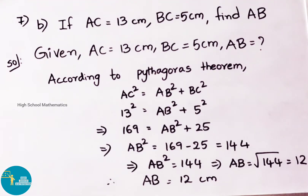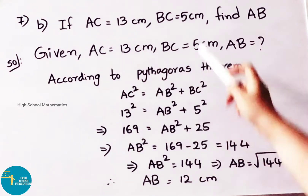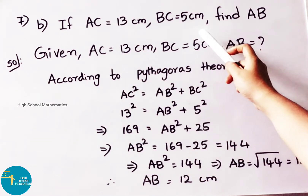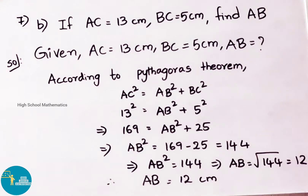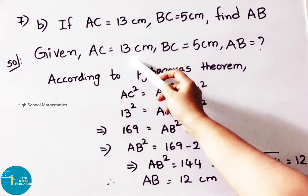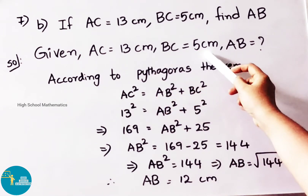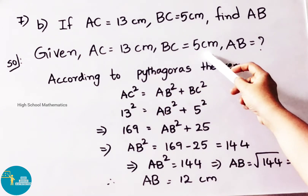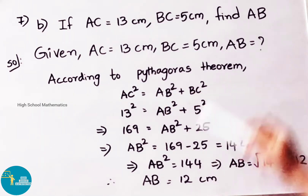See now question 7b. If AC value equals to 13 centimeter and BC value equals to 5 centimeter, find AB. Let us see the solution. Given AC value equals to 13 centimeter, BC value equals to 5 centimeter. Now let us find AB value.